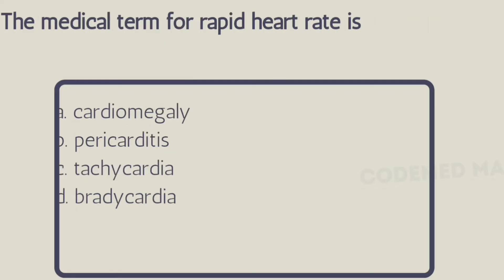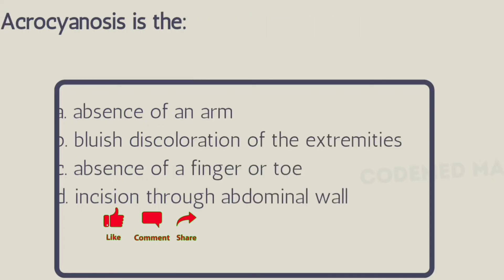Next question: the medical term for rapid heart rate is — Option A: cardiomegaly, Option B: pericarditis, Option C: tachycardia, Option D: bradycardia. The right answer is Option C, tachycardia. 'Tachy' means fast or rapid; 'brady' means slow.